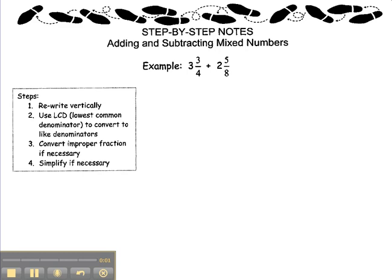To add and subtract mixed numbers, you first want to have a common denominator. First, rewrite vertically: 3 and 3 fourths plus 2 and 5 eighths.